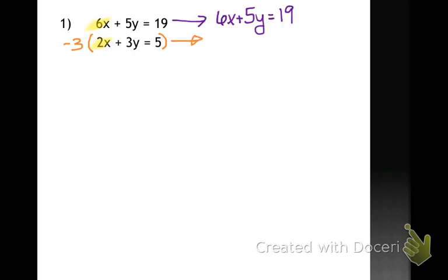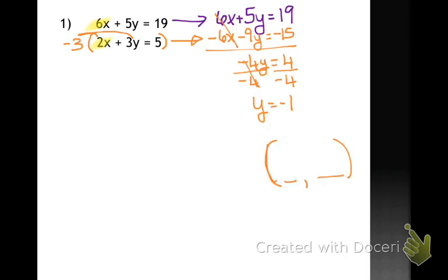And then I'm going to multiply everything in the bottom equation by negative 3. So negative 3 times 2x is negative 6x. And as you can see, I have now created my opposite. Negative 3 times 3y is negative 9y. And negative 3 times 5 is negative 15. Now that I have opposites, I know how to solve this equation by adding them together. And I get that y equals negative 1.